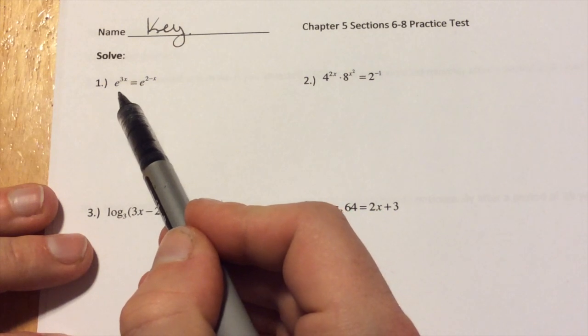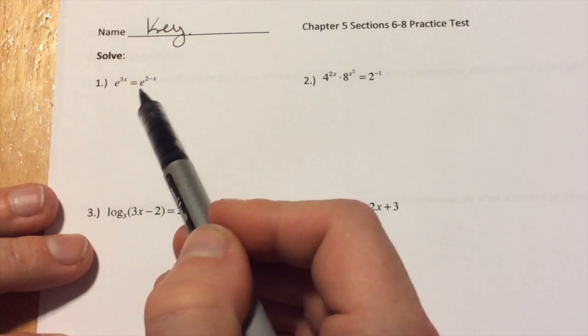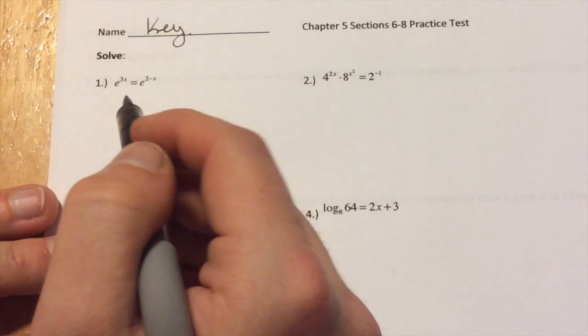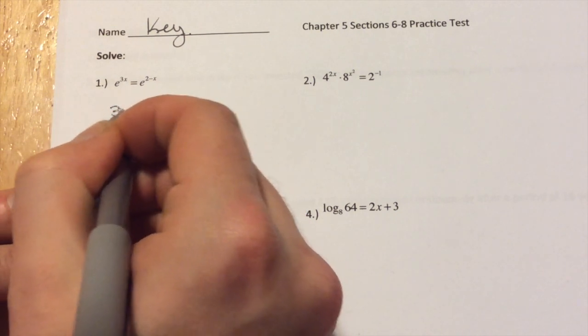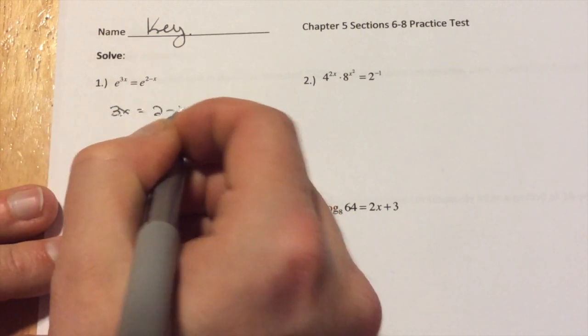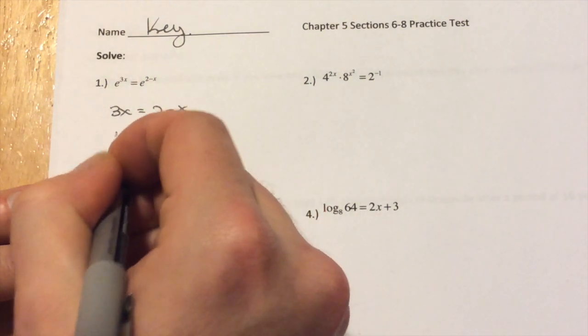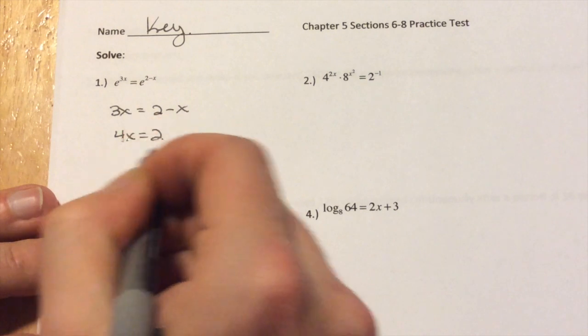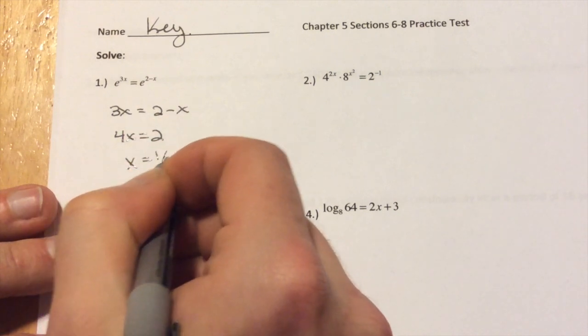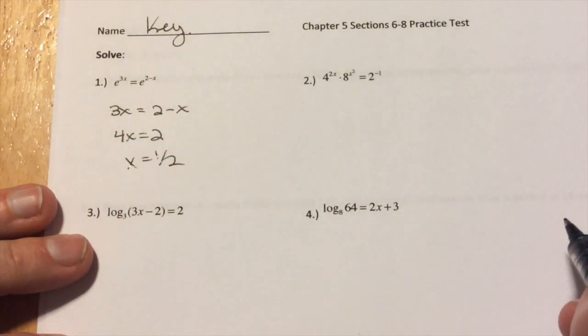So when we're solving exponentials, we look at, are the bases the same? If the bases are the same, we set the exponents equal to each other. So we say 3x equals 2 minus x. Then it's just algebra from here. So we add x, 4x equals 2, then we divide by 4, so x equals 1 half. So far so good.